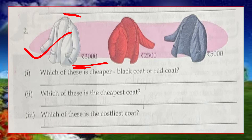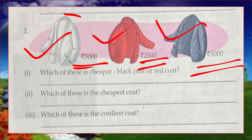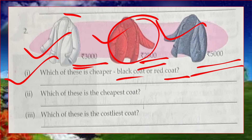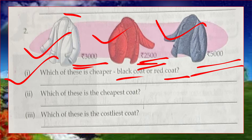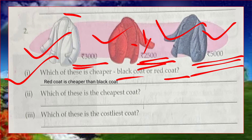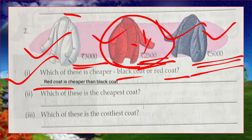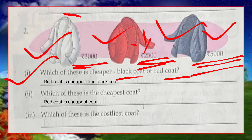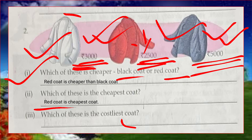Now look at three coats: white coat for ₹3000, red coat for ₹2500, and black coat for ₹5000. Which is cheaper — black coat or red coat? The red coat is cheaper than the black coat. Which is the cheapest coat? The red coat is the cheapest. Which is the costliest coat? The black coat is the costliest, as its value is ₹5000.